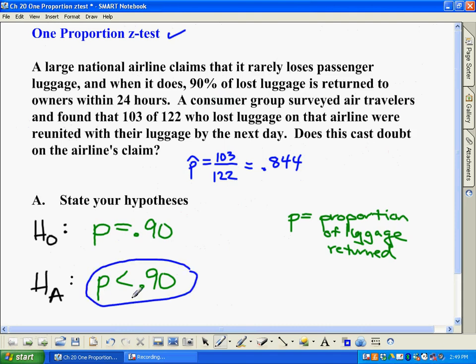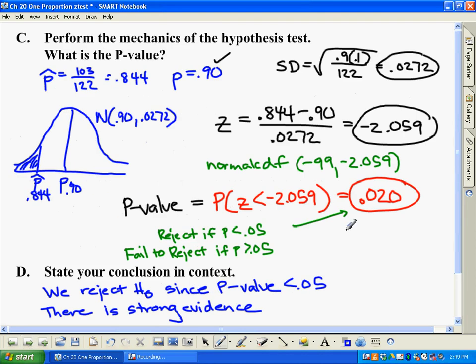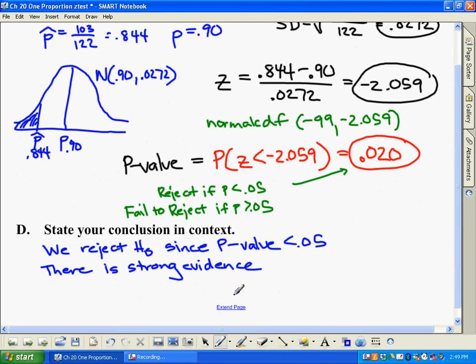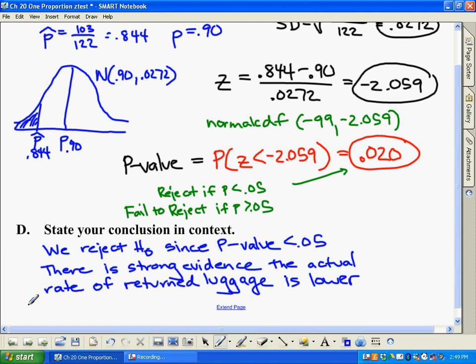So how could we say this in words? What we would say is there is strong evidence that the actual rate of returned luggage is lower than the airline's claim